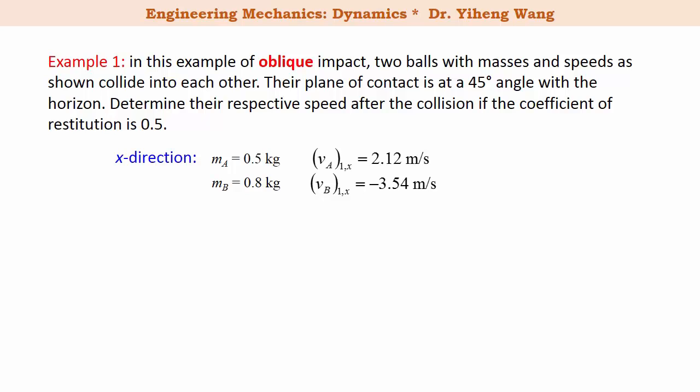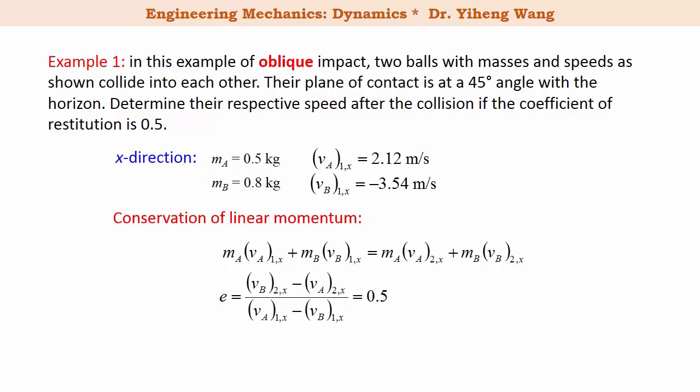Since the x-axis is set up to be along the line of impact, x direction is where impact happens. So along the x direction we can apply the conservation of linear momentum by treating the two particles as one system, and their total linear momentum before the collision is the same as their final total linear momentum after the collision along the x-axis. And since we know that the coefficient of restitution is 0.5, we have two equations, two unknowns, therefore we can solve for both unknowns, which are the final velocities of the two particles but only along the x direction. We still need to know the final velocities of the two particles along the y direction.